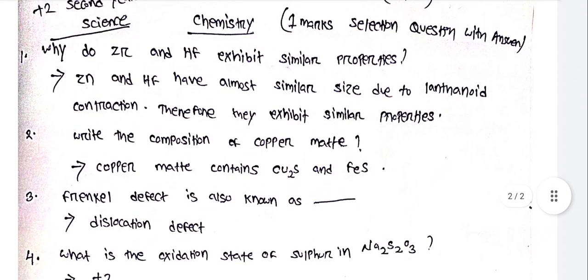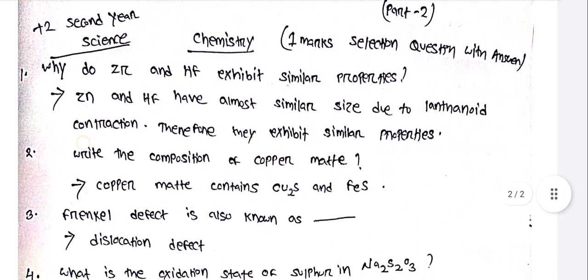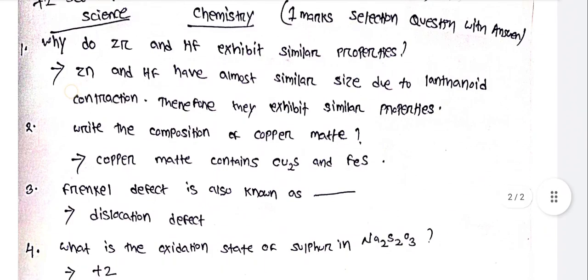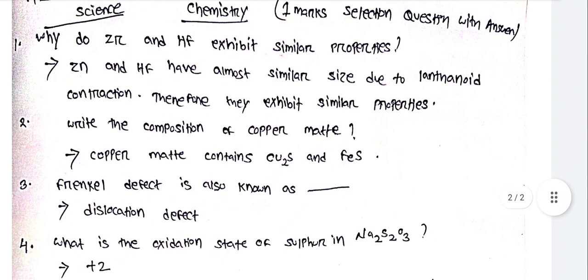Why do Zr and Hf exhibit similar properties? We have discussed this question. Zr and Hf have almost similar size due to lanthanoid contraction, therefore they exhibit similar properties.